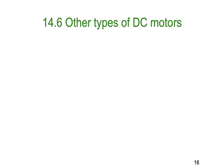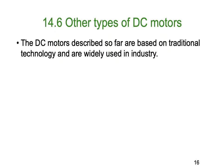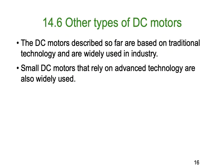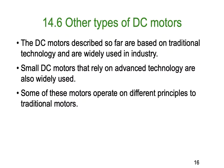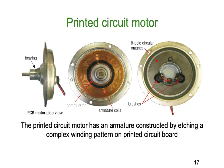DC motors described so far have been based on traditional technologies that have been widely used in industry for 200 years now. Small DC motors that rely on advanced technology are also becoming very widely used. Some of these motors operate on different principles than the traditional motors. Here's a printed circuit board motor — the actual windings are part of a printed circuit board. It's a very flat motor. The armature is constructed by etching a complex winding pattern onto a printed circuit board, and you can see it here. There is still a traditional commutator, but the commutator itself is also printed onto the circuit board.